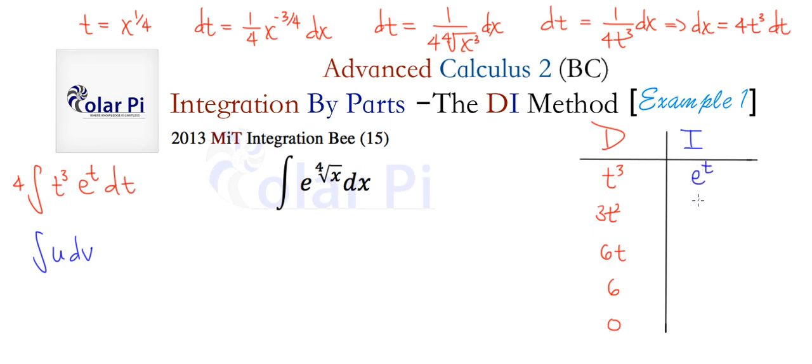And then when we take the integral of E to the T, we get E to the T, and then again E to the T, and then again E to the T. You do this kind of diagonal pairing, which is like, you pair these two, whether or not they like it, these two, these two, and these two.